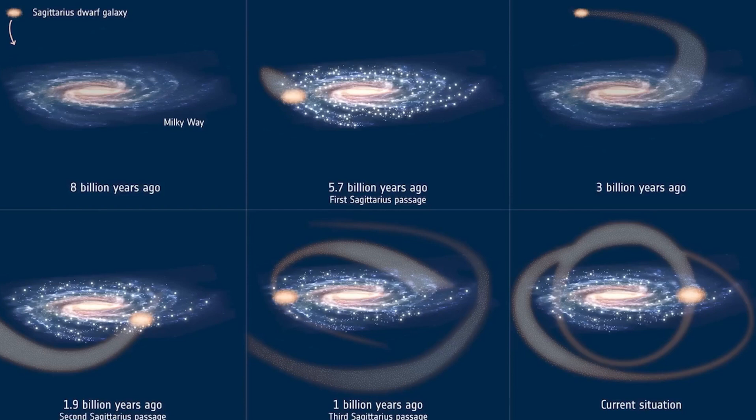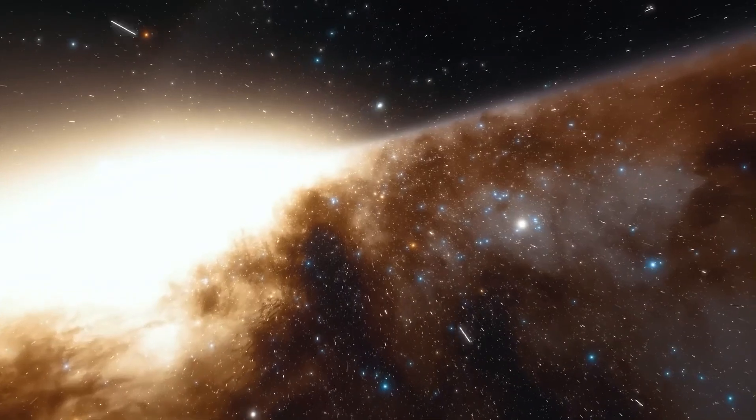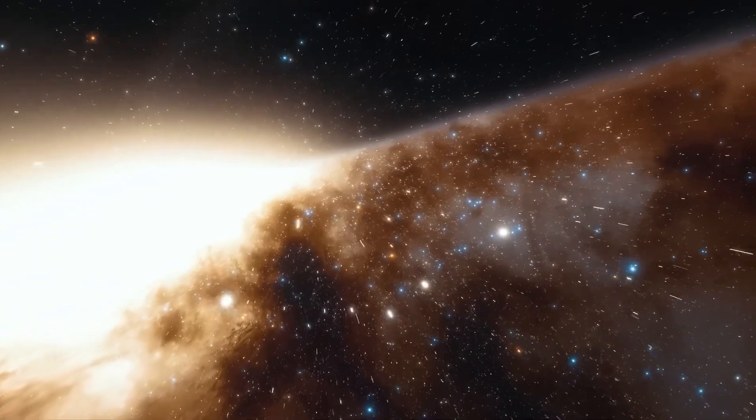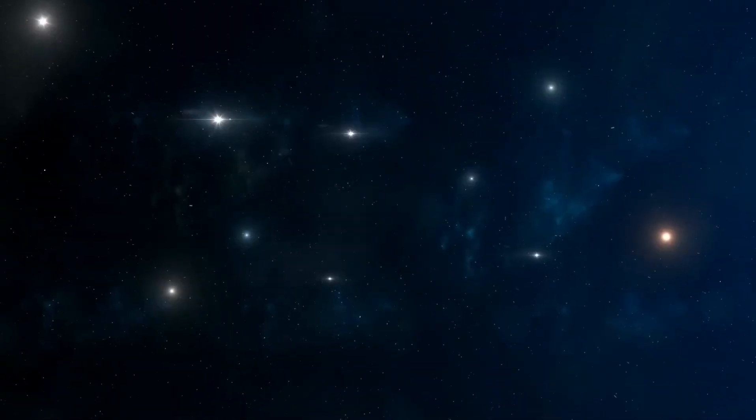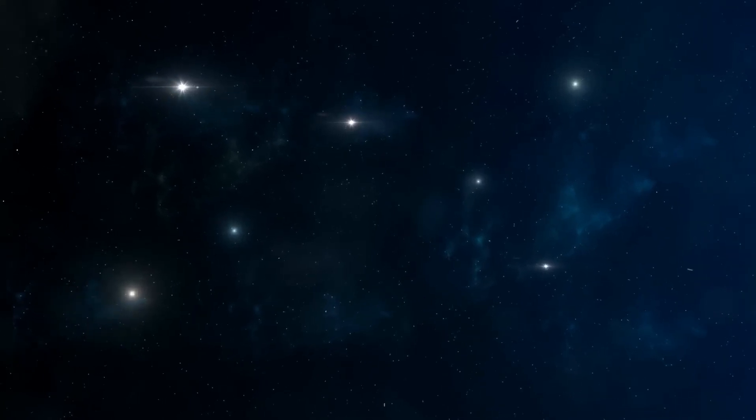For example, the Milky Way has about 50 dwarf galaxies as its companions, such as the large and small Magellanic clouds, which are visible in the southern hemisphere. Dwarf galaxies are important for several reasons.